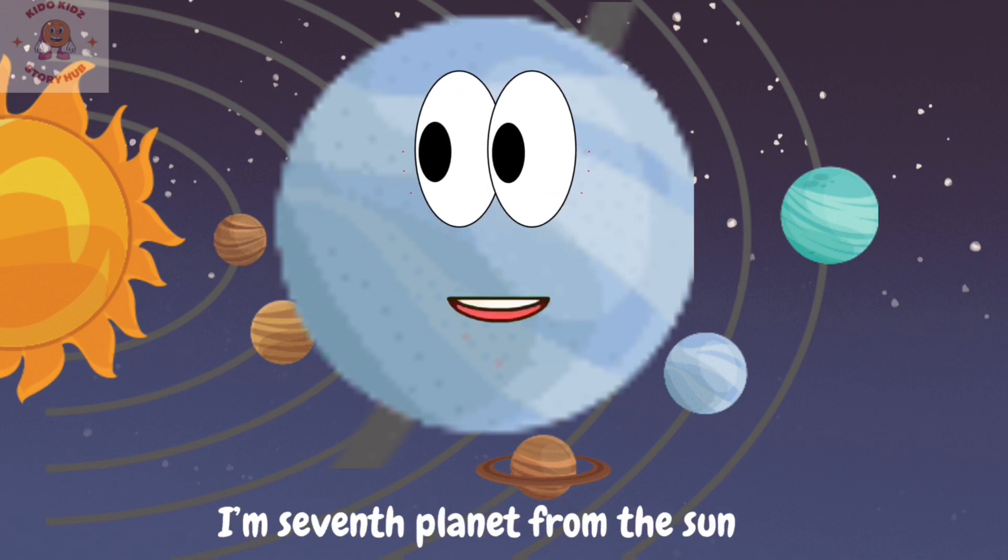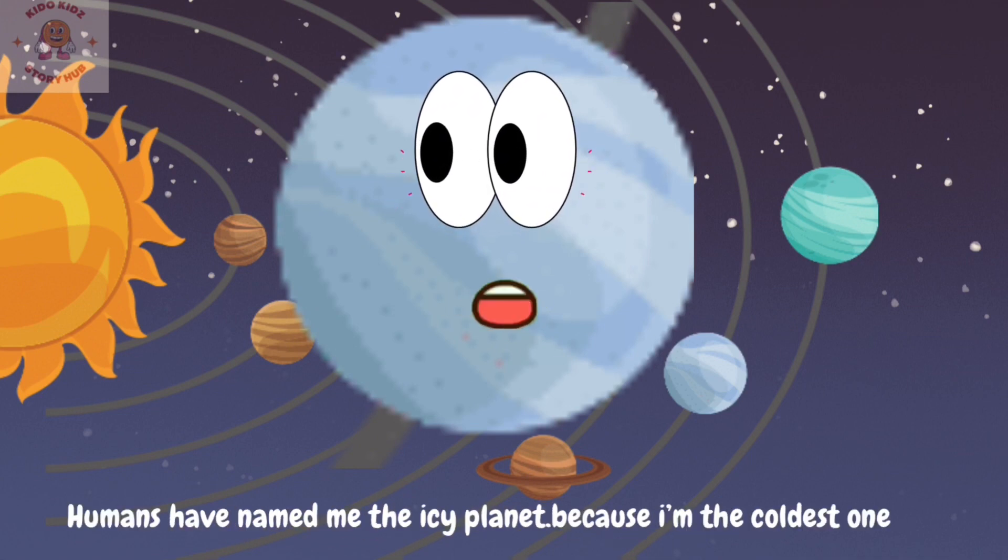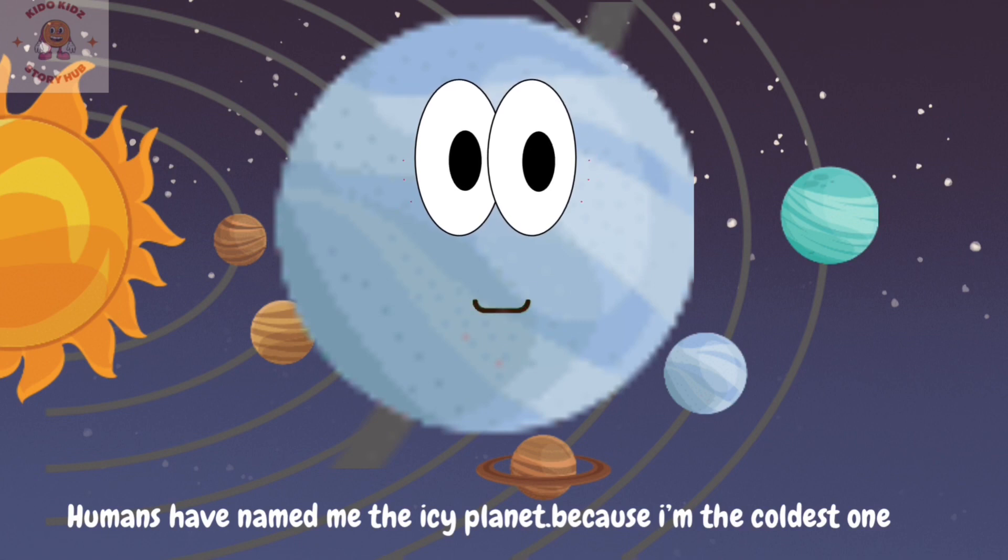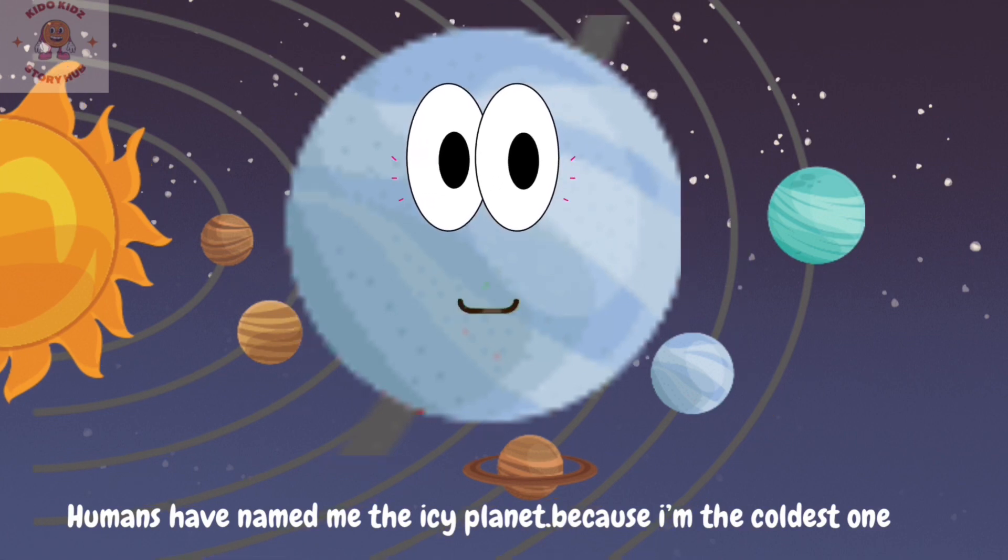Hi, my name is Uranus. I am blue in color. I am the seventh planet from the sun. Humans have named me the icy planet because I am the coldest one.